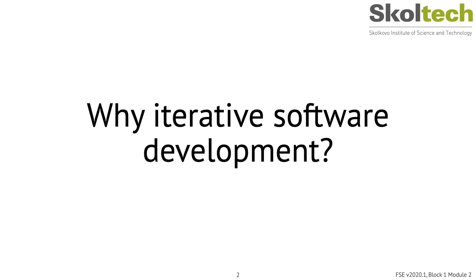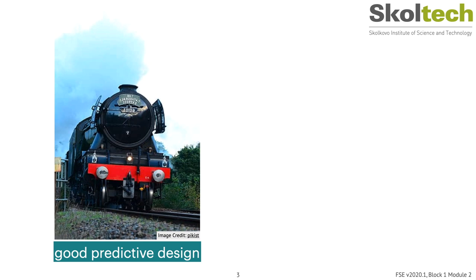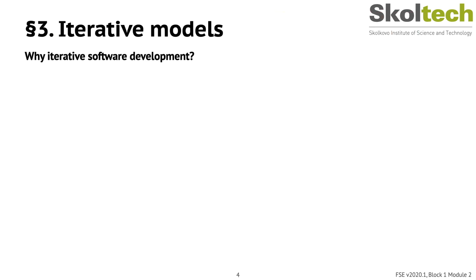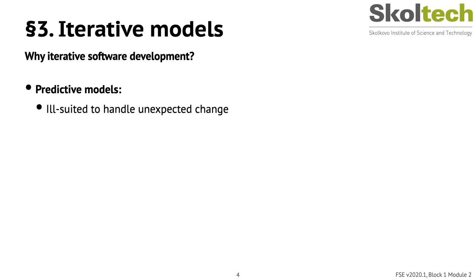Predictive software development has big advantages: it's predictable, encourages a lot of upfront design, and gives a certain inevitability to a project. Unfortunately, this inevitability can lead to either success or failure. If the design is correct and everything stays on track, the project is like a luxury train crawling majestically into Grand Central Station. However, if something goes wrong, the project is more like a train engulfed in flames speeding toward a dynamited bridge. Predictive models are inherently ill-suited to handle unexpected change — they can deal with small changes but don't handle big changes or fuzzy requirements well.